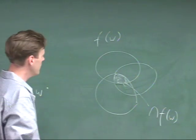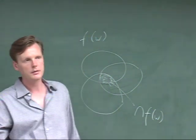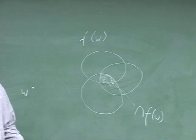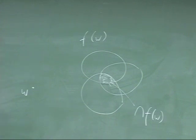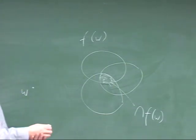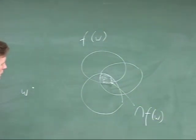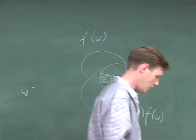A function F from worlds to sets of propositions is what she calls a conversational background. There are again different kinds: epistemic ones, what the law prescribes, what you desire, what you fear — all these can form conversational backgrounds, basically lists of sentences or corresponding propositions, each corresponding to a modal base.